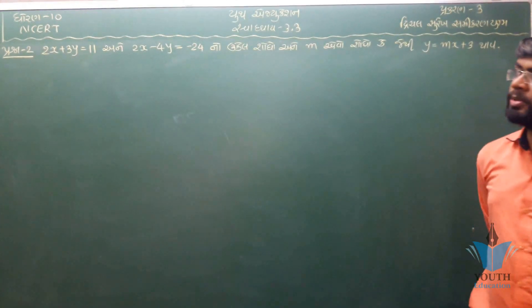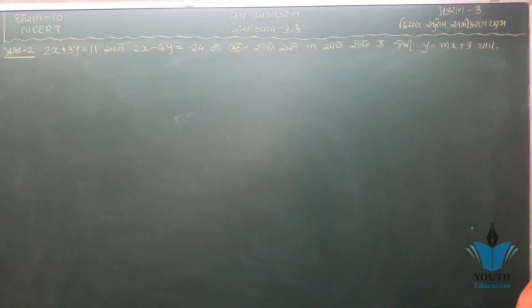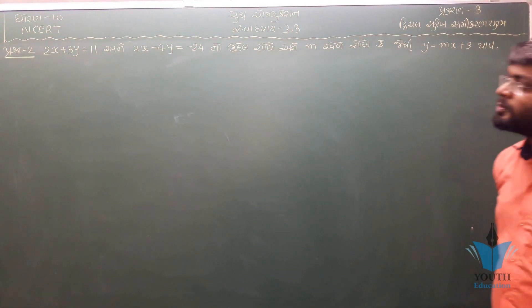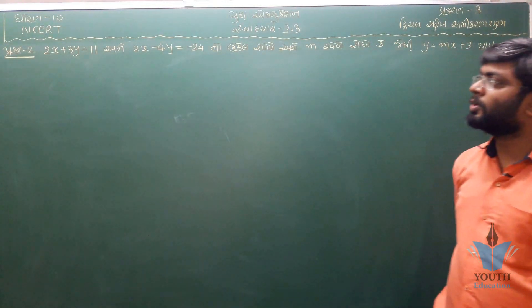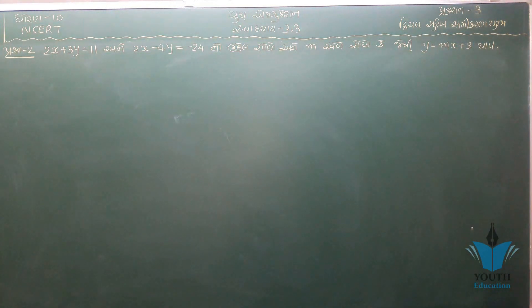Now we have question 3.3: 2x plus 3y is equal to 11 and 2x minus 4y is equal to 24.